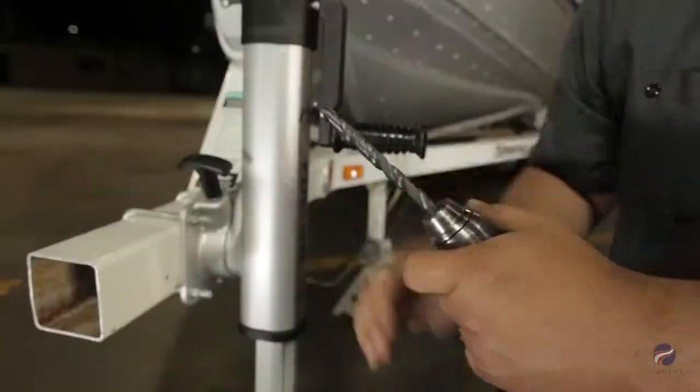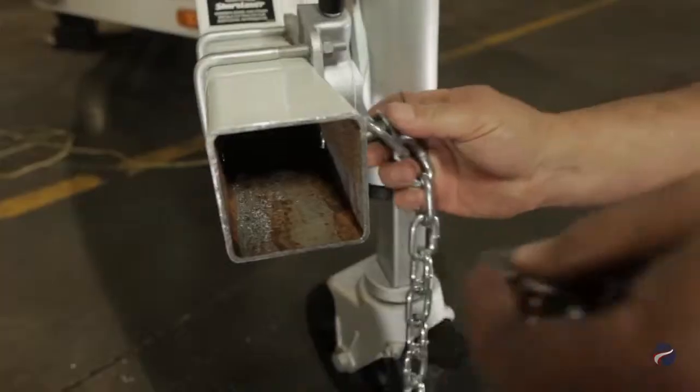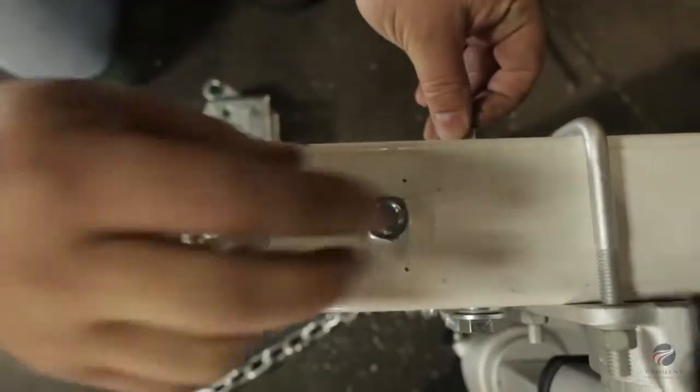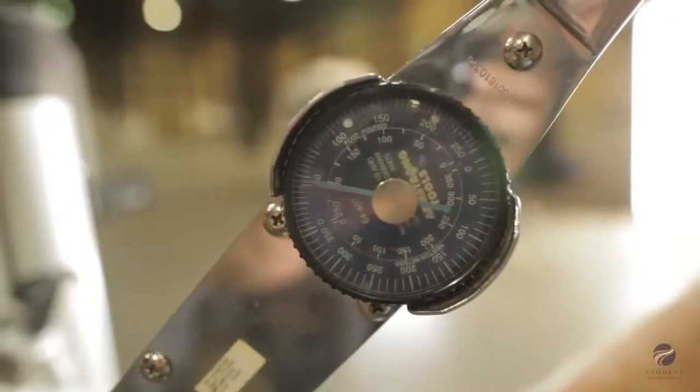Drill to one half inch and secure your safety chains with two separate half inch grade five bolts and lock nuts. Secure to 45 foot pounds.